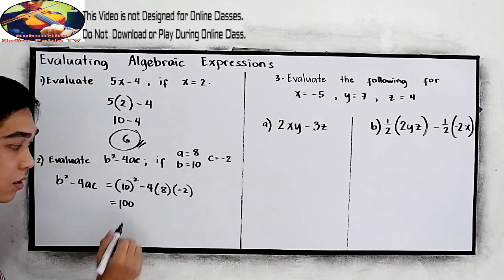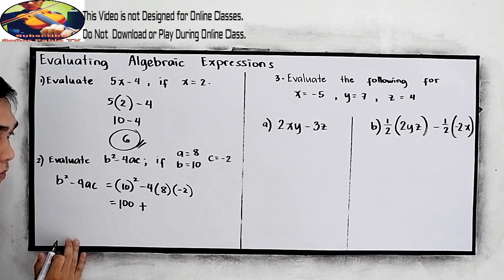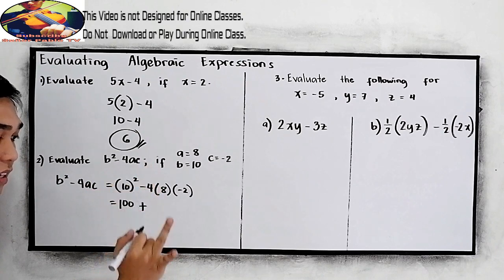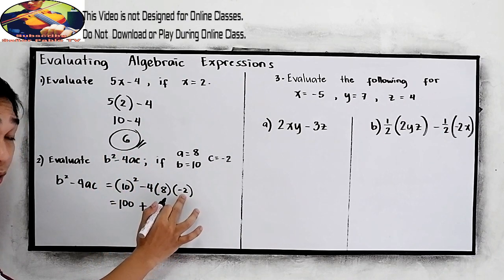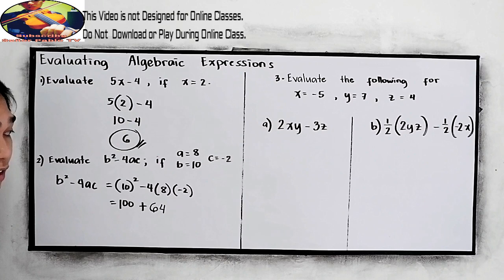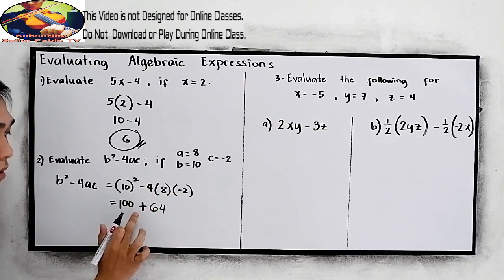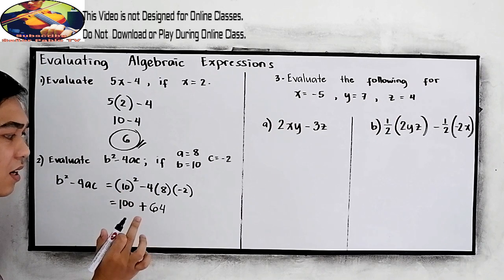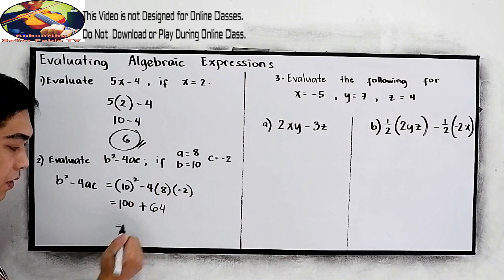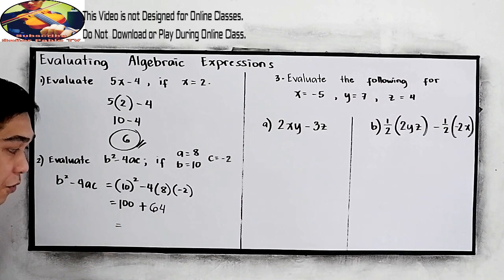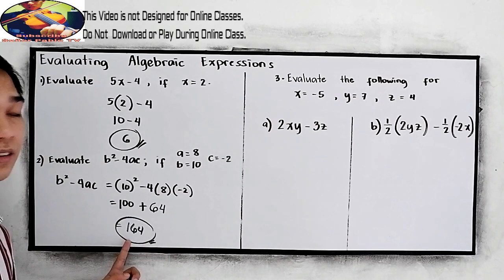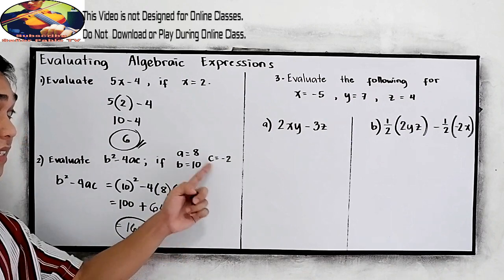Negative times negative, this will give us positive. Now, we have 4 times 8, that is 32, times 2, 64. Again, let us repeat. 4 negative times negative, that is positive. Or we can say that 4 times 2, which is 8, 8 times 8, that's why we have 64. Then, 100 plus 64, 164. This will be the answer if a is equal to 8, b is equal to 10, and c is equal to 2.